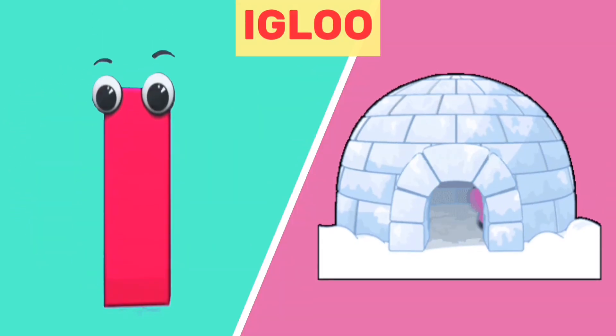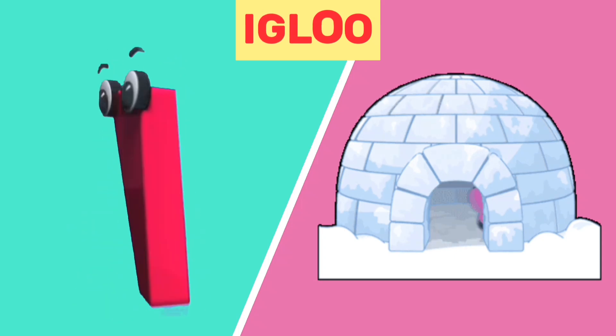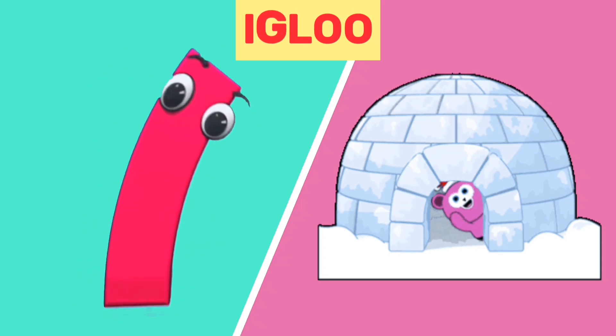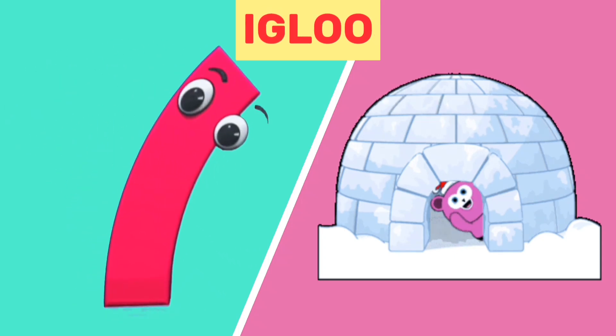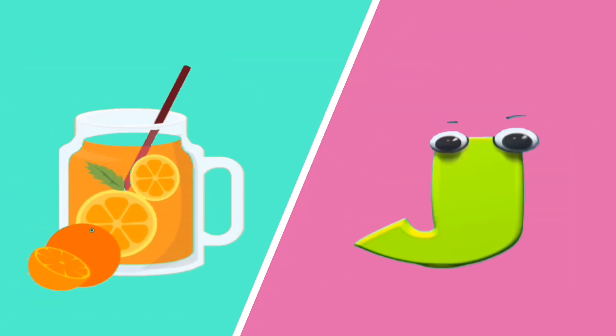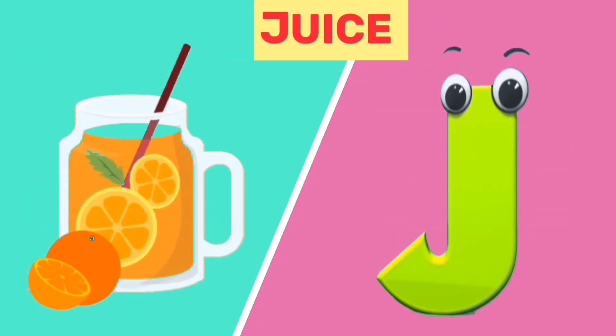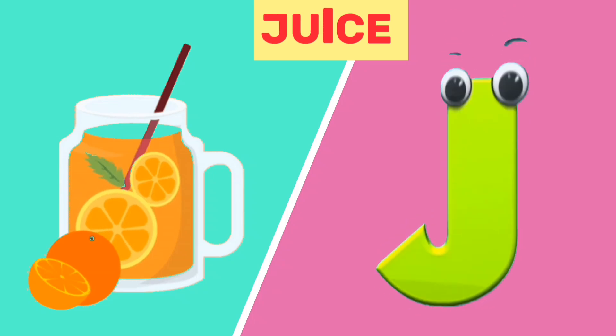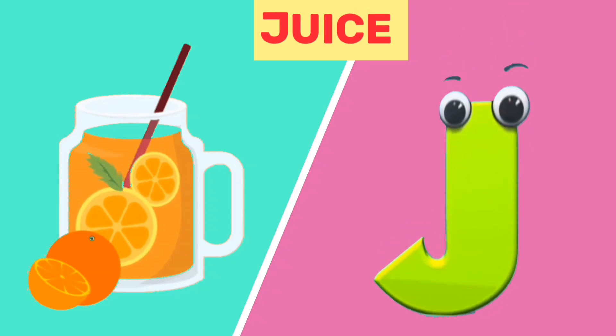I is for igloo. I, igloo. J is for juice. J, juice.